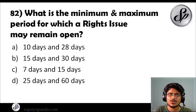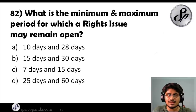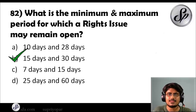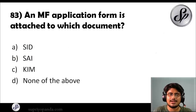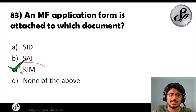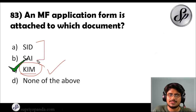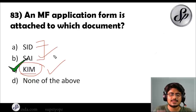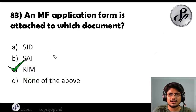Question eighty-two: what is the minimum and maximum period for which a rights issue may remain open? The answer is 15 days minimum and 30 days maximum. Question eighty-three: an MF application form is attached to which document? The answer is KIM — the Key Information Memorandum. Also remember the SID (Scheme Information Document) and the SAI (Statement of Additional Information) — all documents pertaining to mutual funds.